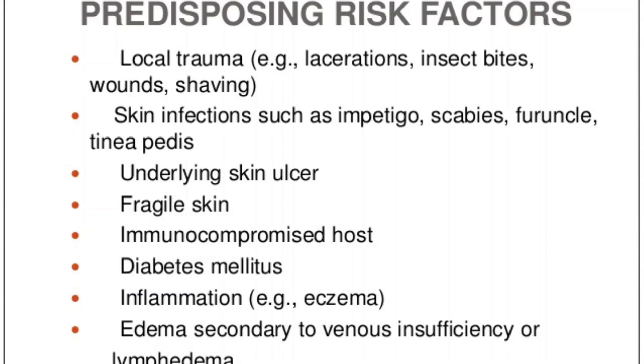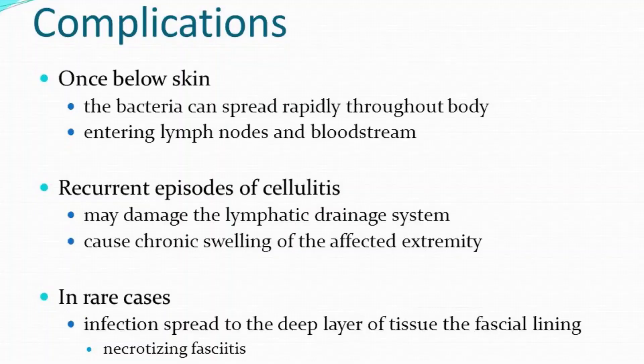Recurrent episodes of cellulitis may damage the lymphatic drainage system and cause chronic swelling of the affected limb. Rarely, the infection can spread to the deep layer of tissue called the fascial lining. Necrotizing fasciitis is an example of a deep layer infection and it is an extreme emergency.